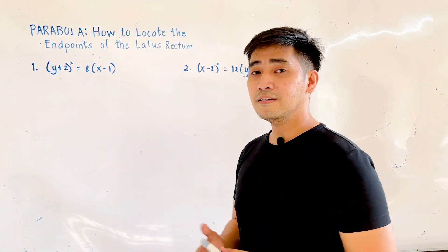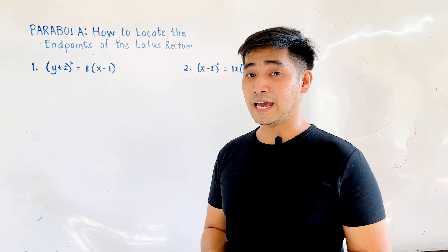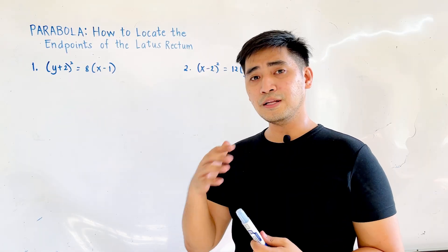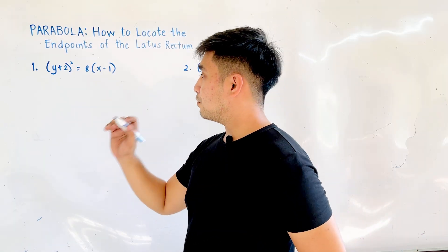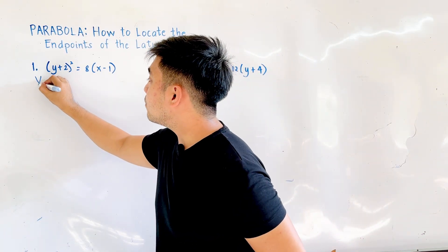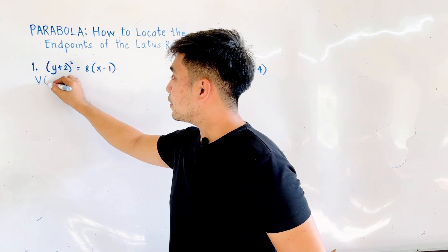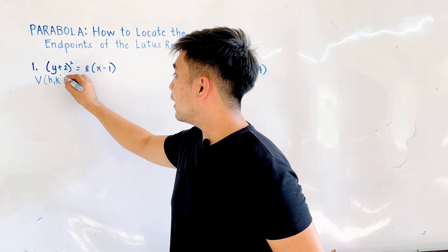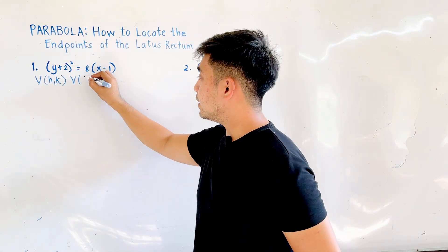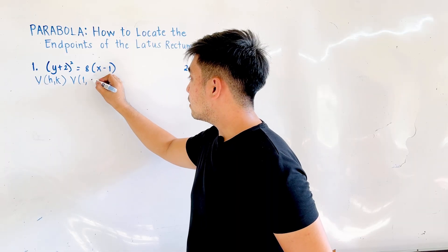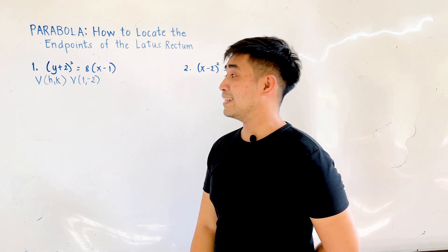The first problem is: (y minus 2) squared is equal to 8 times (x minus 1). The first step is to identify the vertex. The vertex is located at (h, k), which gives us positive 1, negative 2. So that is our vertex.